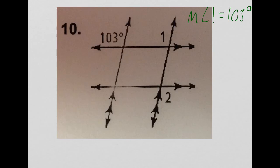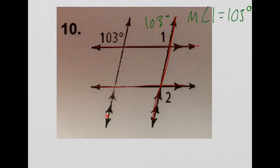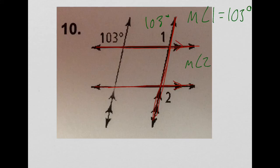Now that we know the measure of angle 1 is 103 degrees, we can find the measure of angle 2. We now focus on a different set of lines — the ones that angle 1 and angle 2 are each touching — and ignore the other line completely. These two lines are marked as parallel, and angle 1 and angle 2 are alternate exterior angles — on the exterior of the two lines, on alternate sides of the transversal, and non-adjacent. Since the lines are parallel and these are alternate exterior angles, angle 1 is congruent to angle 2. The measure of angle 2 is 103 degrees.